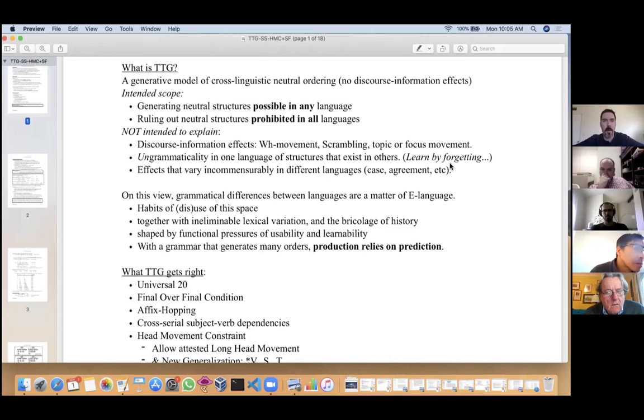I mentioned Niels Jerne's Nobel lecture on the generative grammar of the immune system—the idea that you start out as a child able to respond to many environmental inputs, and it's only by forgetting the ones you don't encounter that you form the adult system. I'm also setting aside effects that vary incommensurably in different languages, like case and agreement.